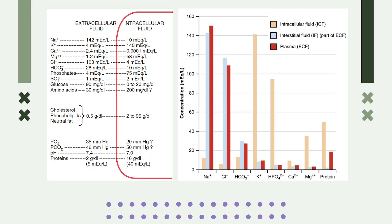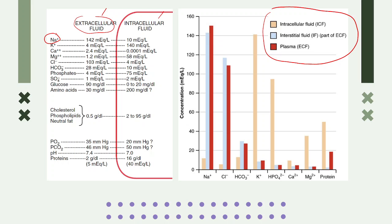Electrolytes are not just found in one compartment — it is just that the majority can be found at a certain part. For example, sodium can be found in both extra and intracellular compartments, but the majority is in extracellular fluid. The graph shows concentration across the three major compartments: ICF, ECF — divided into interstitial and plasma.